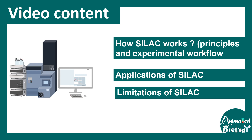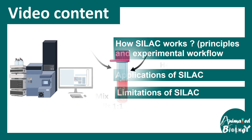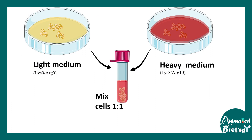Let us begin with the experimental workflow. We have to culture cells in two separate aliquots. In one aliquot, we have to grow them in a light medium containing the amino acid lysine 0 or arginine 0 — the light version of these amino acids. There are specific commercially available media which have these compositions.